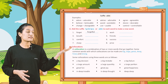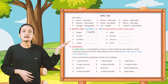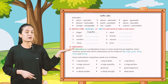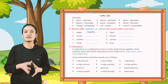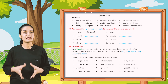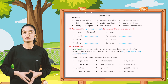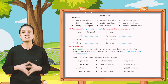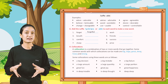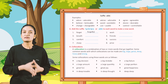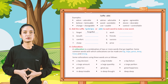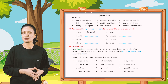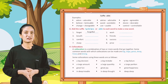Now suffix -ABLE. Examples are: Adore — Adorable. Advise — Advisable. Agree — Agreeable. Believe — Believable. Avoid — Avoidable. Desire — Desirable. Change — Changeable. Use — Usable. And Control — Controllable.